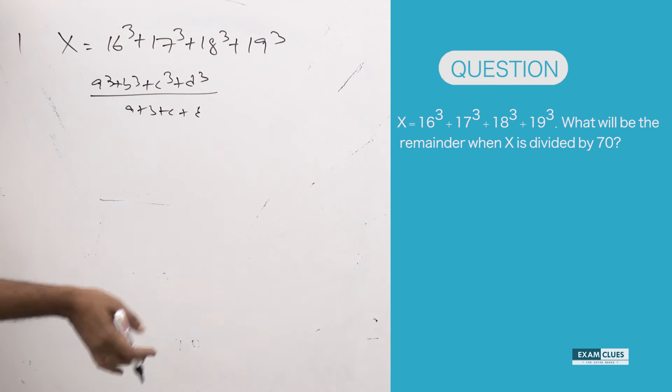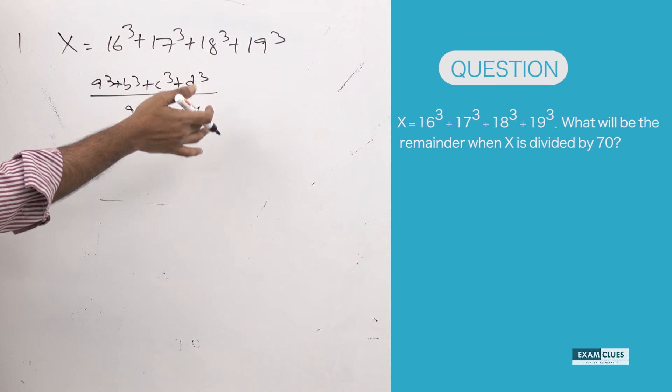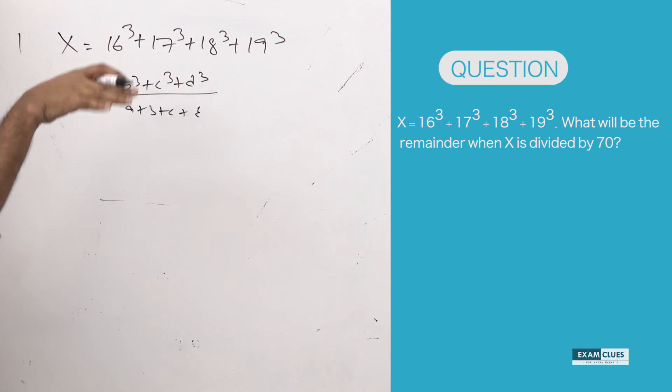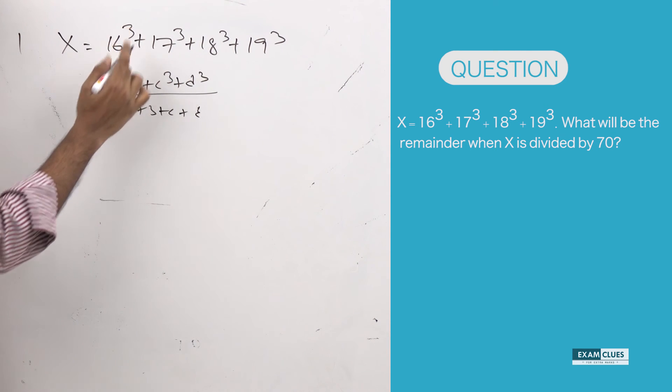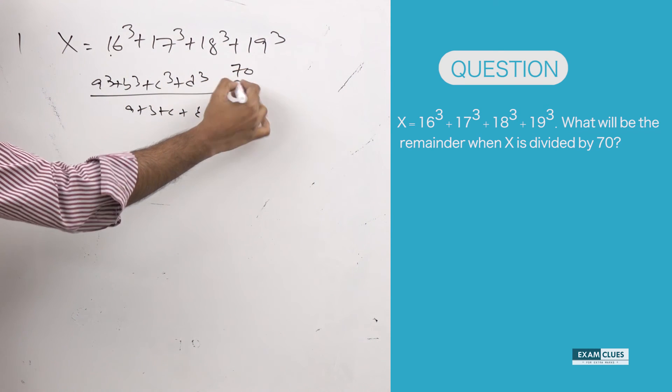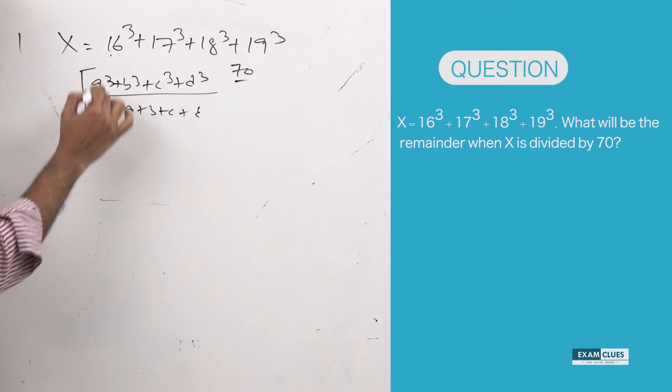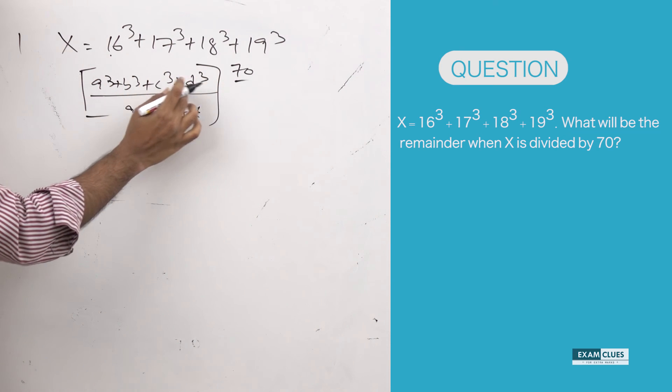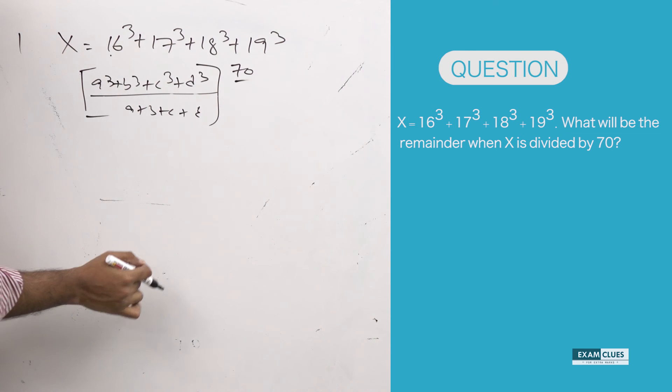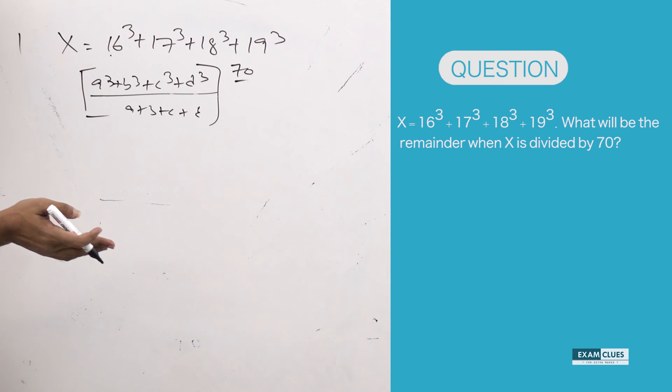Because in our solution, we solved it saying this is divisible by 70, which is incidentally the sum of these digits. But that is not true, that is what I am saying. Because if you see 16 plus 17 plus 18 plus 19, this is 70. But actually, in all cases, A cube plus B cube plus C cube plus D cube is not divisible by A plus B plus C plus D.